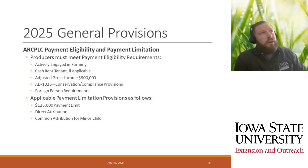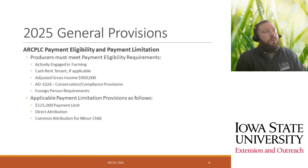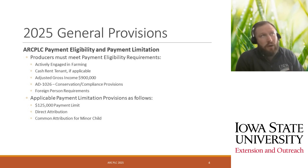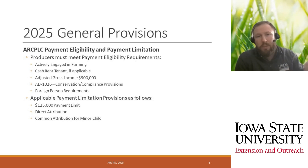Some 2025 general provisions for ARC PLC cover payment eligibility and payment limitation, and these have not changed from previous years. Producers must be actively engaged in farming. We do look at cash rent tenant status if applicable. The adjusted gross income level, the AGI, is still $900,000 for the program this year. We also look at the 1026 conservation compliance provisions and foreign person requirements. The payment limitation is staying the same at $125,000, and this applies with direct and common attribution — payments go down to the individual's social security number through that direct attribution process.